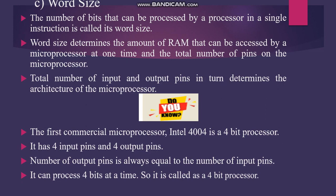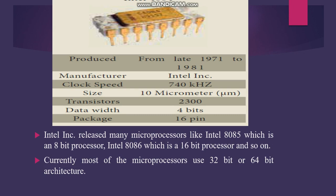Word size is the number of bits that can be processed by a processor in a single instruction — that is, the amount of data that can be accessed by a microprocessor at a time. For example, a 4-bit processor has 4 input pins and 4 output pins and processes 4 bits at a time. This corresponds to the Intel 4004, the first microprocessor. Nowadays we use 32-bit or 64-bit microprocessors.